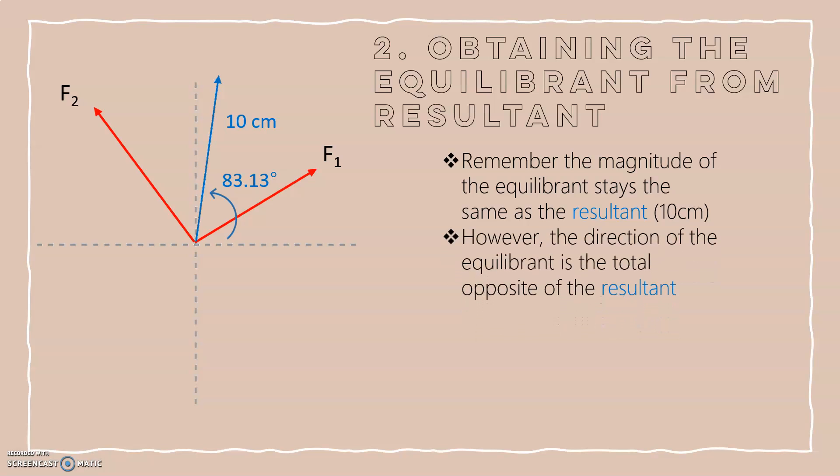However, the direction of the equilibrium is the total opposite of the resultant. So applying what we know, let's calculate the direction of the equilibrium.